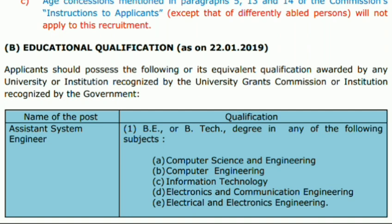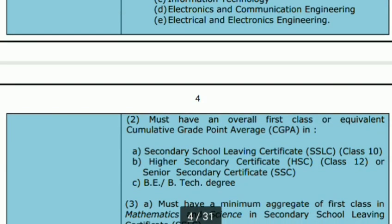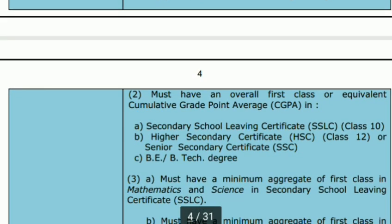We have to add to the next category and we are going to write the same as possible. Computer Engineering, Computer Science, ECE or EEE — you can do it in the first class. In the 10th class and the 12th class, you can do it with maths and chemistry.